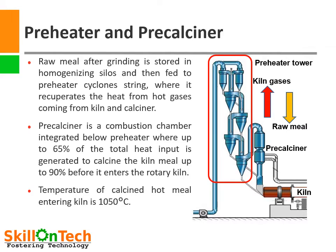Raw meal after grinding in the VRM is stored in homogenizing silos. From this silo it is fed into the pre-heater tower. Pre-heater towers are a series of 5 to 6 cyclones one above each other. These cyclones act as heat exchangers — as hot gas coming from the kiln system loses heat, the raw meal is heated from 60°C at the entry point to 850°C at the bottom cyclone.